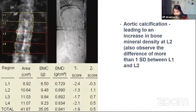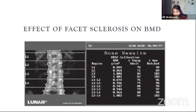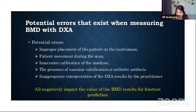Aortic calcification can increase bone mineral density on DEXA. While studies have shown that a significant number of women over 60 have aortic calcification, it may not change BMD in a very significant way, but it is something to keep in mind. Facet sclerosis — which is very common — can also affect bone density readings. Some potential errors include improper placement of the patient, patient movement during the scan, inaccurate calibration, presence of vascular calcification, arthritic artifacts, and inappropriate interpretation of DEXA results by the practitioner.